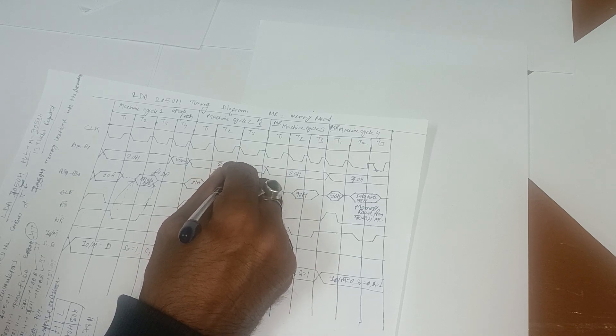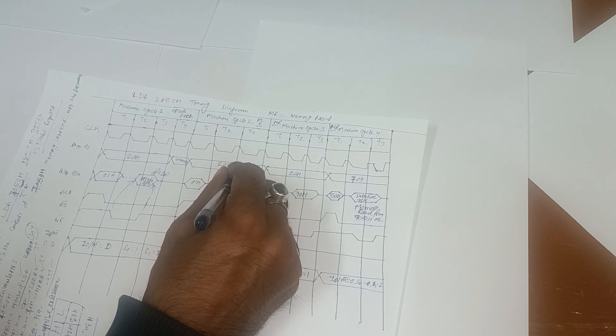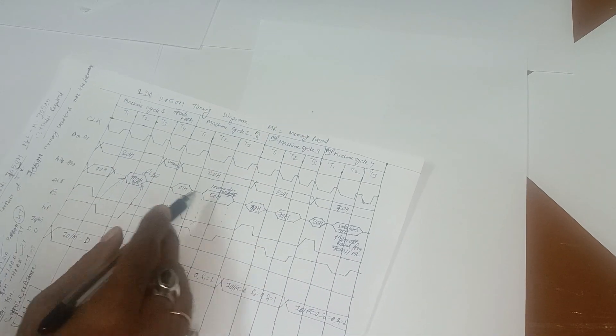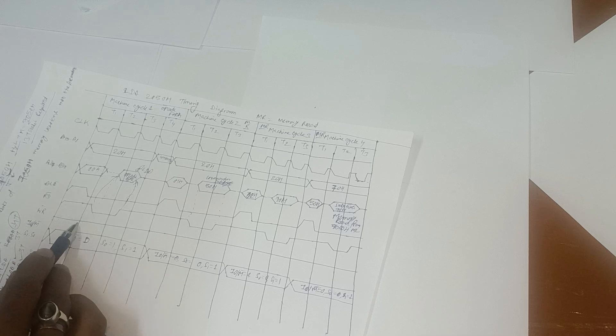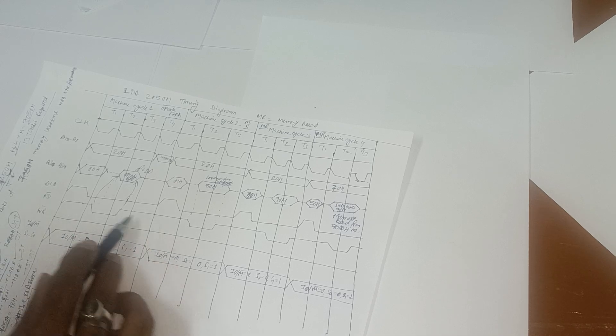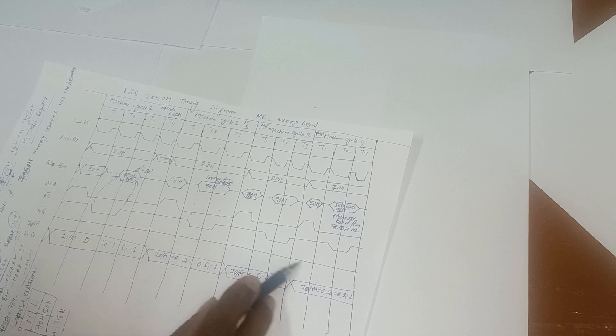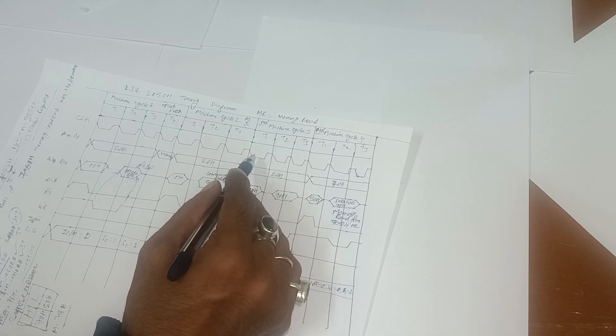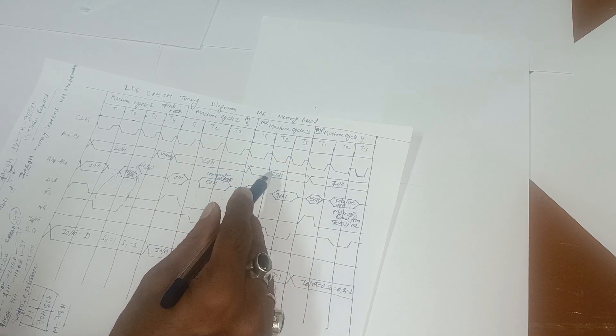The lower-order address byte 50H is treated as a data byte during this machine cycle and appears on the data bus as 50H. Since this is a memory read, READ-bar is enabled during T2 to T3, WRITE-bar is disabled. IOM-bar is 0 (memory operation), S0 is 0, S1 is 1 for memory read.